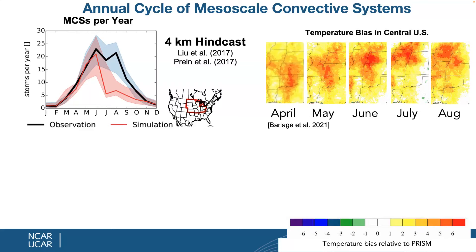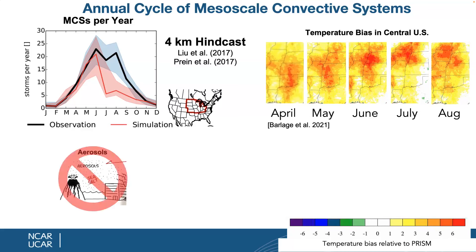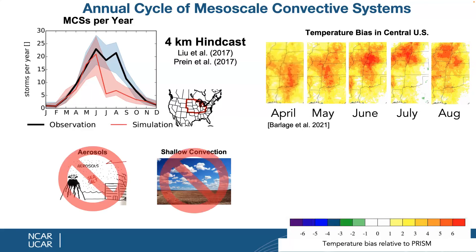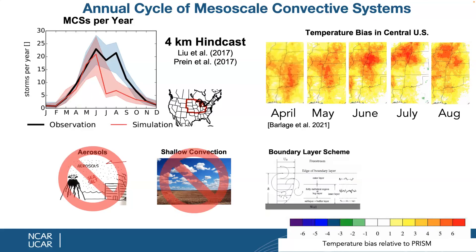As atmospheric modelers at NCAR, our first idea was aerosols — they should cool the region, and we treated them rudimentarily. We tested this: aerosols do cool the region slightly but are not a driving force. We also tested shallow convection — it cools the region a little, but not much. And we tested different boundary layer schemes — WRF offers a large variety, but they don't really affect these biases either.